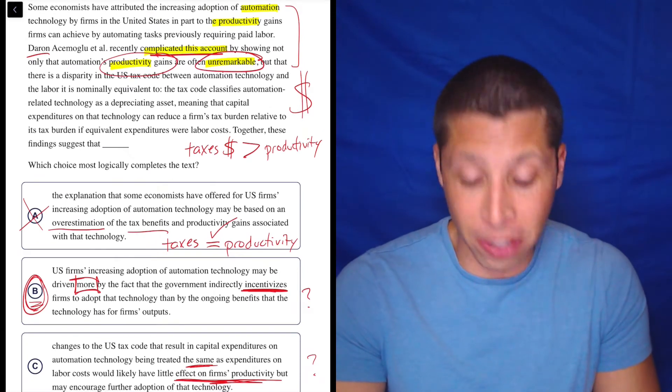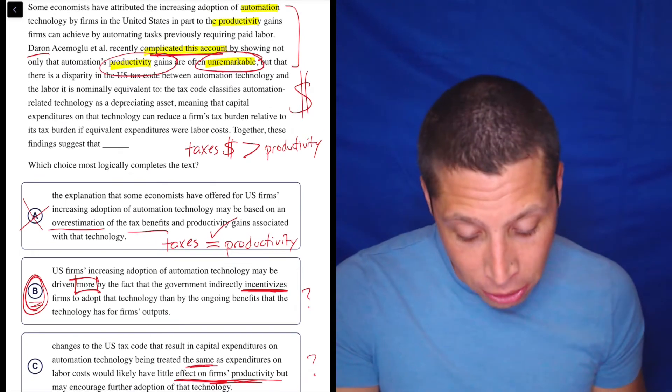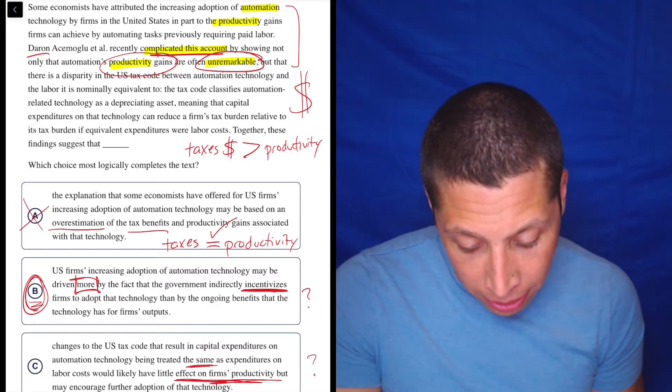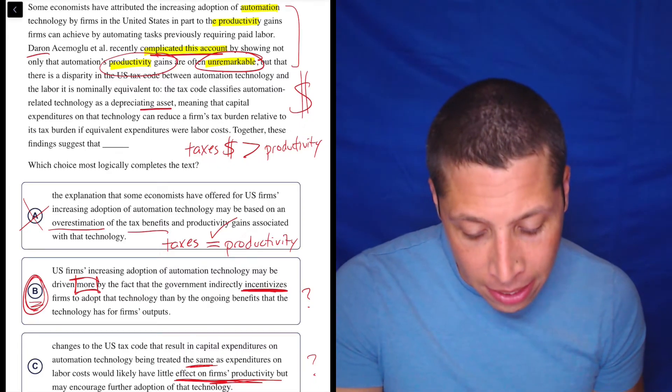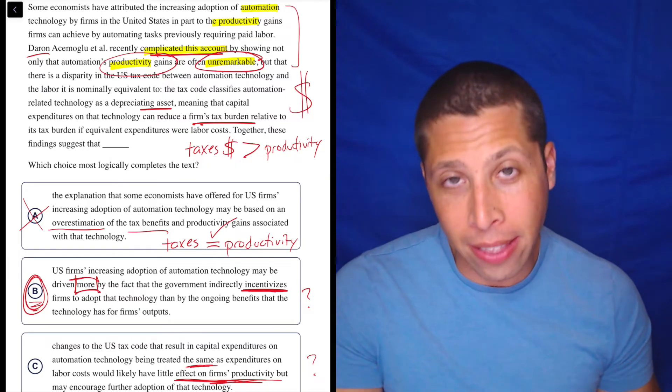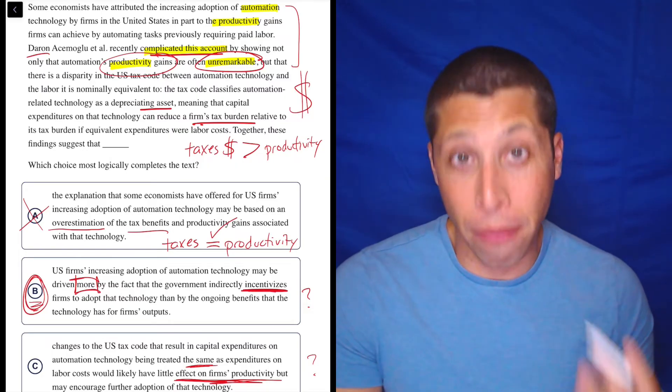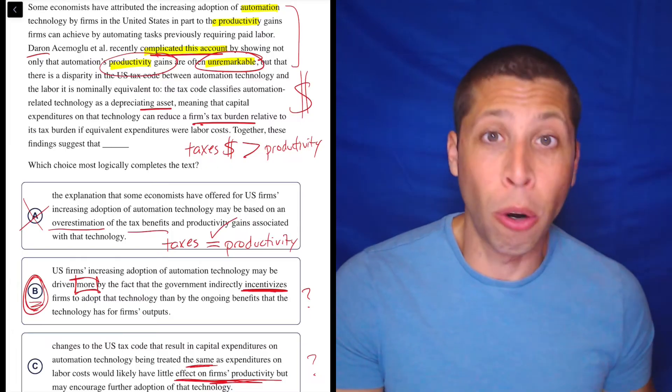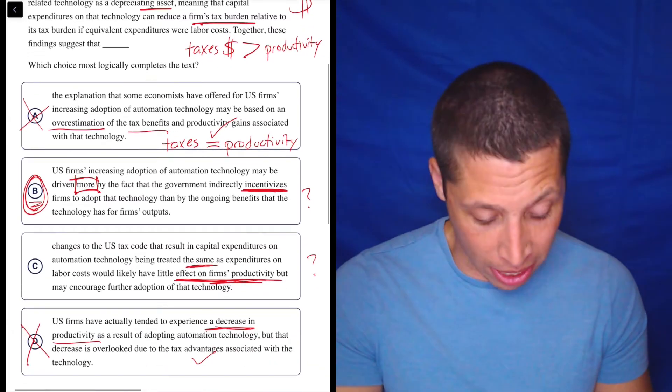And so that is what this crazy part of the passage that we didn't really understand is about. They talk about the tax code. They talk about it being an asset. It reduces the tax burden, meaning that the government has made it like profitable to hire robots instead of people.